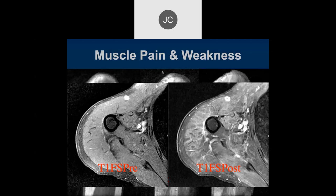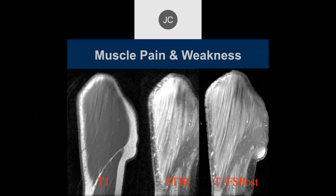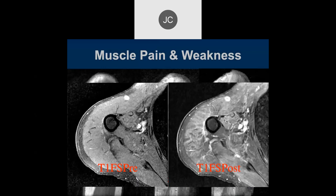It looks like there's edema or enhancement around the muscles — probably around the clavicles. You can see on the STIR that there is edema. We know this is enhancement — there's kind of a streaky enhancement pattern, a little bit more diffuse, but these are all the muscles in the area and most of them are abnormal.